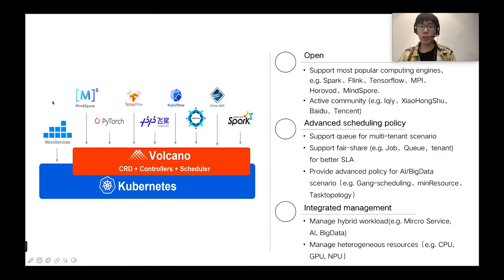Volcano is a combination of CRDs, controllers, and schedulers. It is also an open source community that supports most computing engines like Spark, Flink, TensorFlow, MPI, and MindSpore. It is an active community with many contributors. It has advanced scheduling policies, support queue for multi-tenant scenarios, support fair share for job, for queue, for tenant, for better SLA, provide advanced policy for AI and big data scenarios. It integrates management, manage hybrid workloads, and can also manage heterogeneous resources like CPU, GPU, and NPUs.